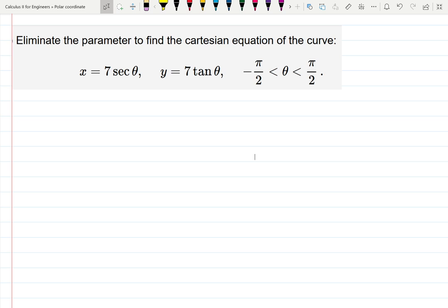So x is 7 sec theta, and y is 7 tangent theta, and theta is a parameter, an angle in this case, which has a domain from minus pi over 2 to pi over 2.